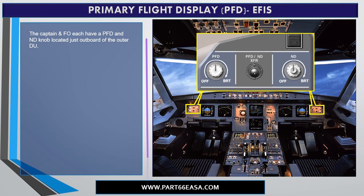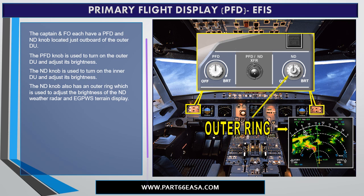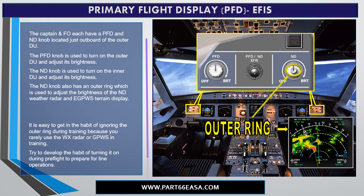The captain and first officer each have a PFD and ND knob located just outboard of the outer DU. The PFD knob is used to turn on the outer DU and adjust its brightness. The ND knob also has an outer ring used to adjust the brightness of the ND weather radar and E-GIPWIS terrain display. It is easy to get in the habit of ignoring the outer ring during training because you rarely use the weather radar or GIPWIS in training. Try to develop the habit of turning it on during pre-flight to prepare for line operations.